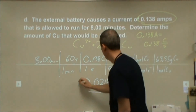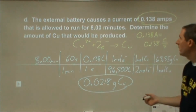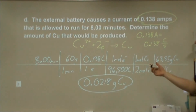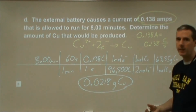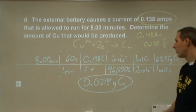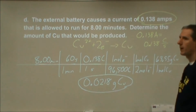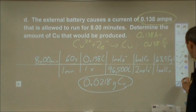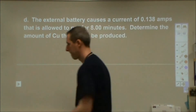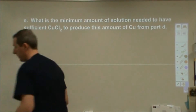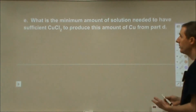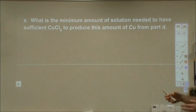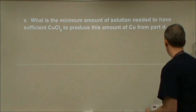That's not very much — running for 8 minutes with a small current, we get very little copper: about 0.021 to 0.022 grams. Now using that number, we want to go back and figure out how much actual solution we'd need to have that much copper chloride — or to get that much copper.